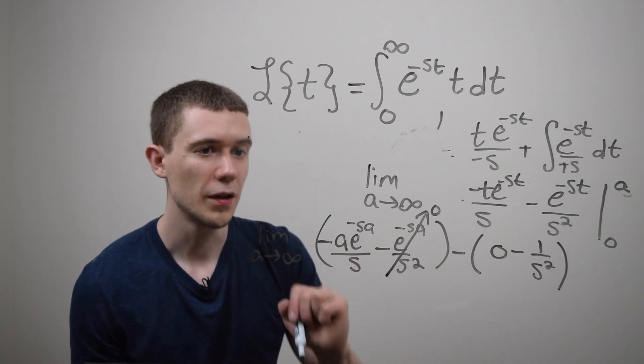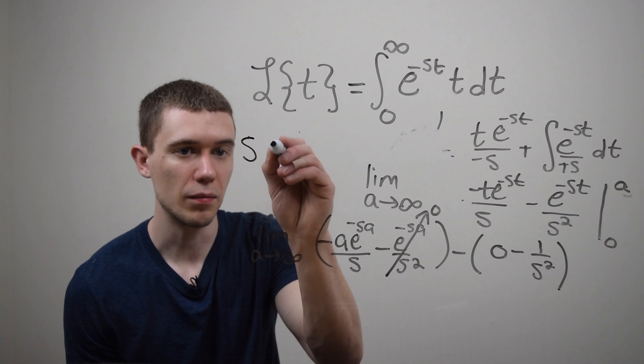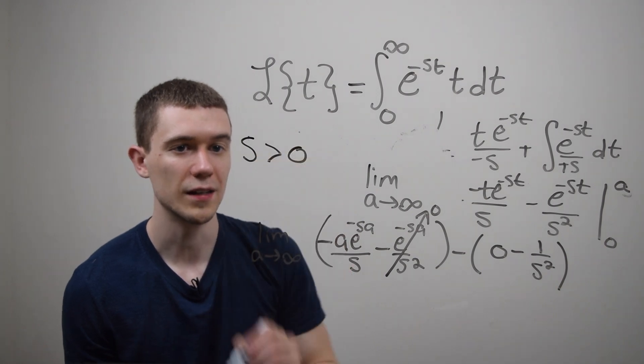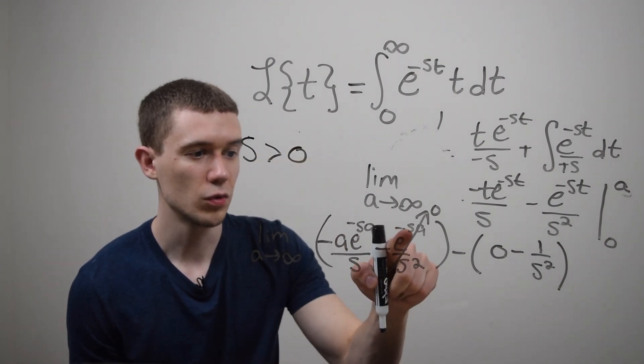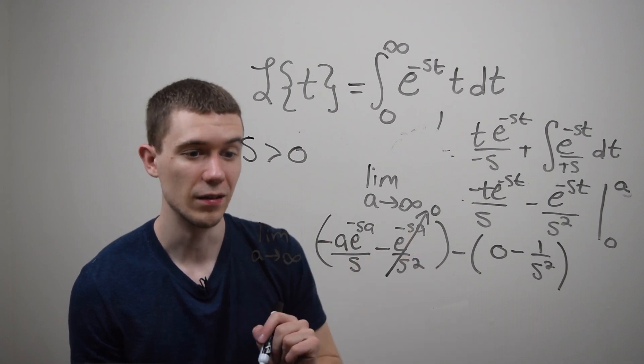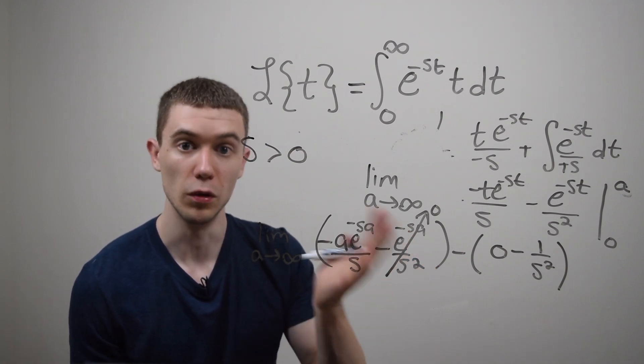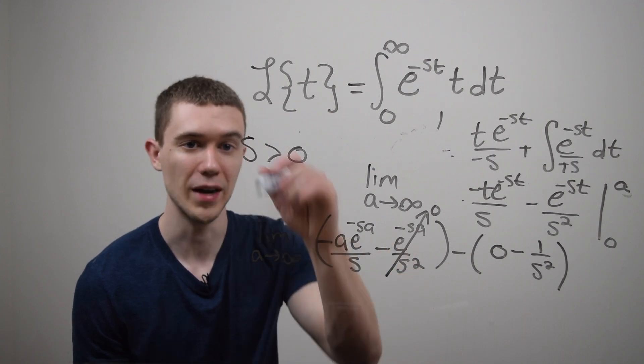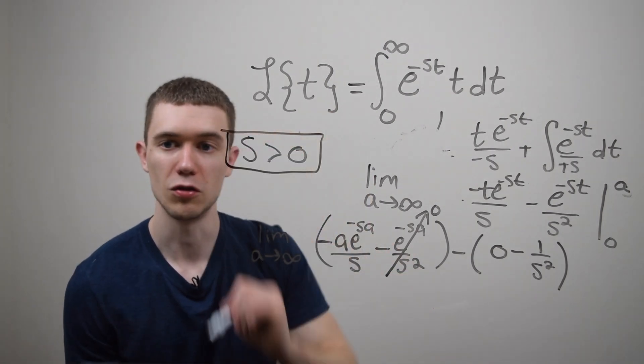Well that will happen if I have e to the minus infinity heading towards e to the minus infinity. But if you think about the values of s that's only going to happen for positive s right? If s was negative this would be e to the positive infinity and this Laplace transform would blow up so that's not what we want to happen. So I have to make this domain restriction on s.